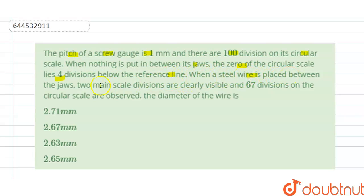When a steel wire is placed between the jaws, two main scale divisions are clearly visible and 67 divisions on the circular scale are observed. The diameter of the wire is a, b, c, d—options are given here, so we have to find the correct option.